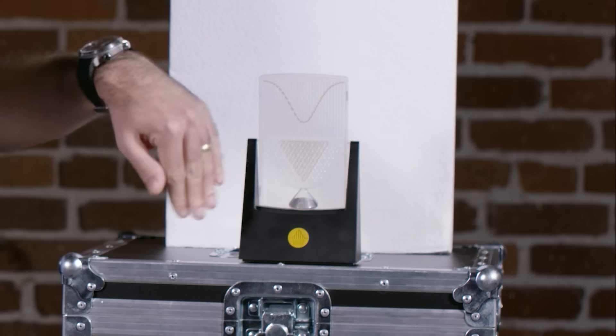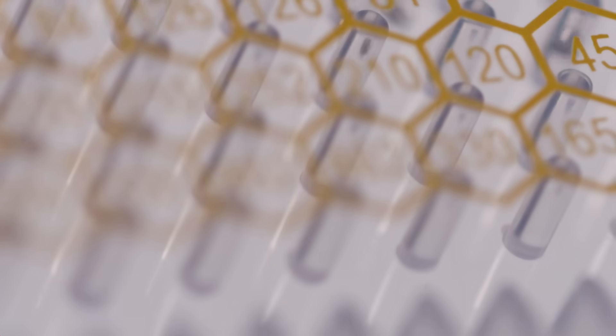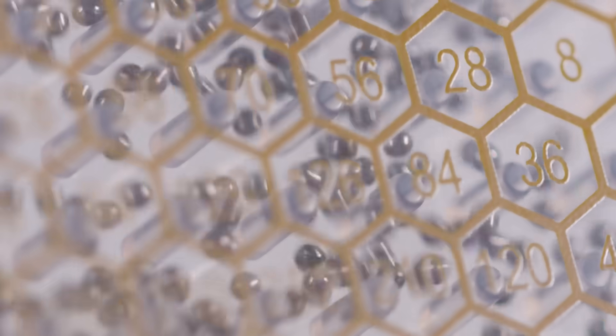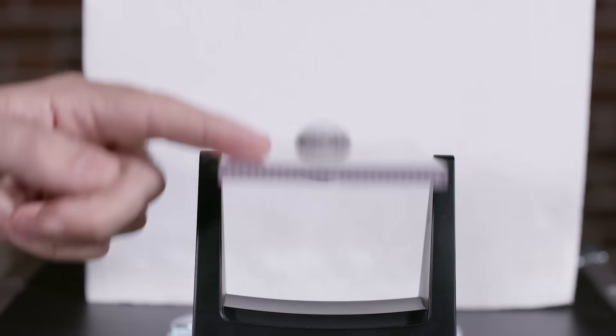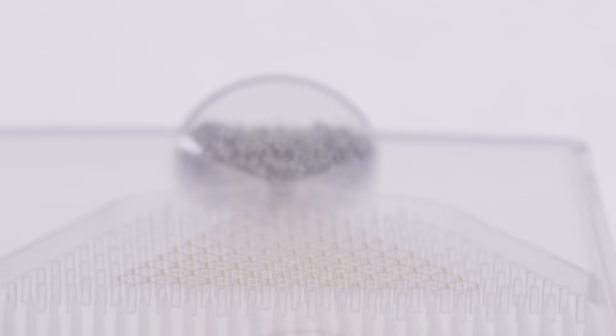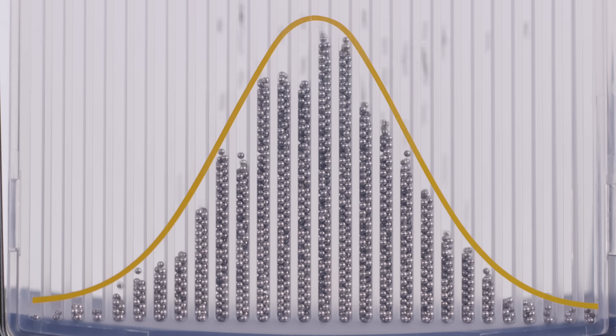What we have is a bunch of pegs and a bunch of slots. Now when I turn this over, all of these balls, 3,000 of them, will fall through those pegs and they'll scatter randomly in the sense that we don't know where each individual ball will go. But because there are so many of them, out of chaos comes order. Look at all that wonderful wild randomness turning into pretty much the same exact shape every single time. A normal distribution.